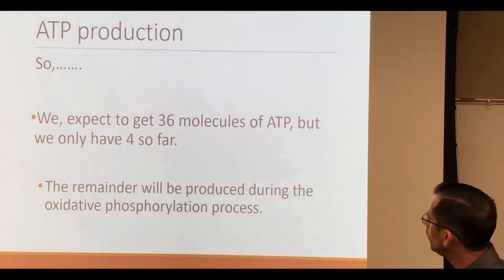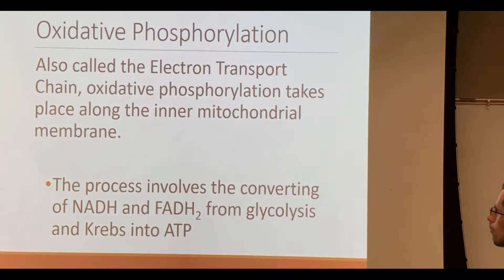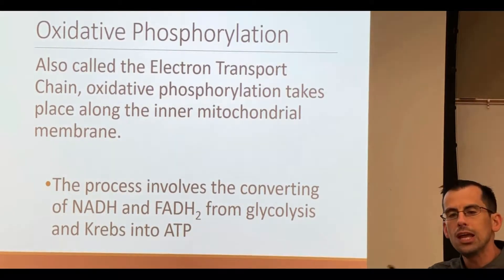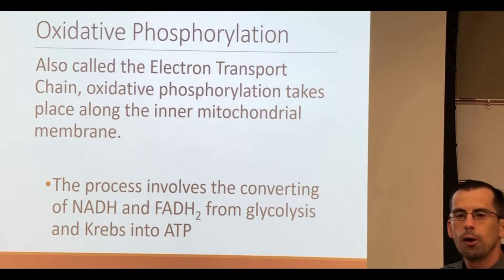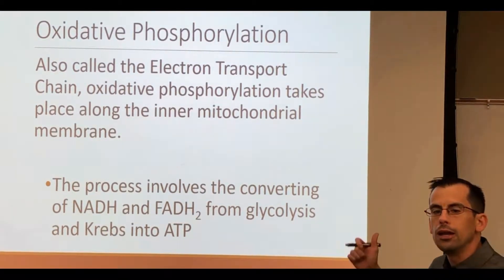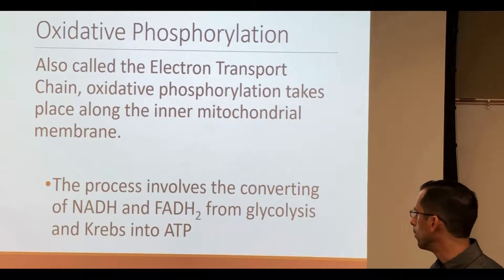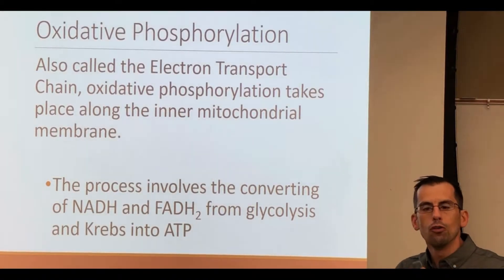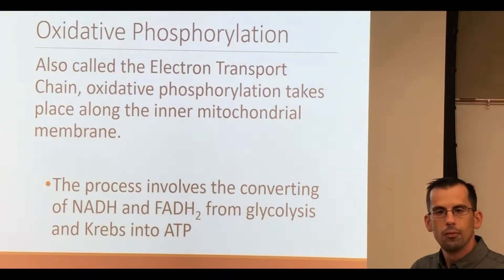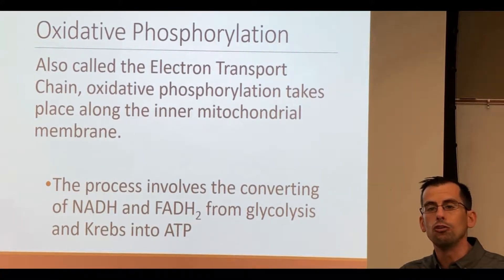The remainder of these ATPs are going to come from our oxidative phosphorylation process, also called the electron transport chain. Oxidative phosphorylation is going to take place along the inner mitochondrial membrane. The mitochondria has a double membrane structure, and the proteins and enzymes in this process are embedded in the inner mitochondrial membrane. The process is going to involve NADH and FADH2 — products from glycolysis and Krebs — as we convert those energetic molecules into ATP.